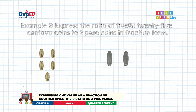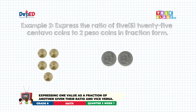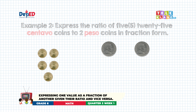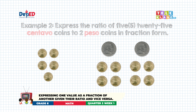Example number two: express the ratio of five 25-centavo coins to two peso coins in fraction form. As we can see, the given quantities have different units — one is in centavo and the other one is in peso. In order for us to express the ratio, we need the quantities to be of the same unit by converting one of them. In this case, we will convert peso into centavo. We know that in one peso, we have four 25-centavos. Therefore, in two pesos, we have eight 25-centavos. Since we already have the same unit, we can proceed now in expressing the ratio.